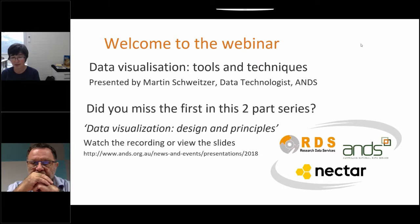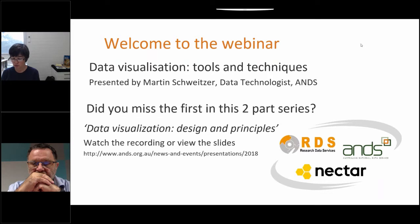Martin has a background in computer science and a particular interest in visualization, data science, and user interface design. His professional background includes photography, working on large IT systems, lecturing, and running workshops and training courses. Martin is currently seconded to ANZ from the Bureau of Meteorology, where he is largely responsible for the climate record of Australia. Today Martin is presenting the second in a series of two webinars on data visualization, with today's focus on tools and techniques.